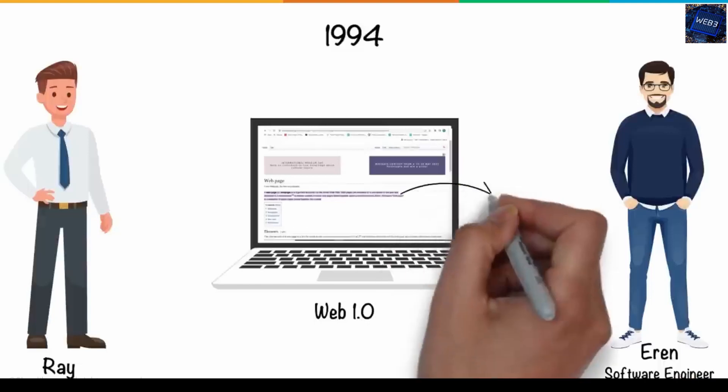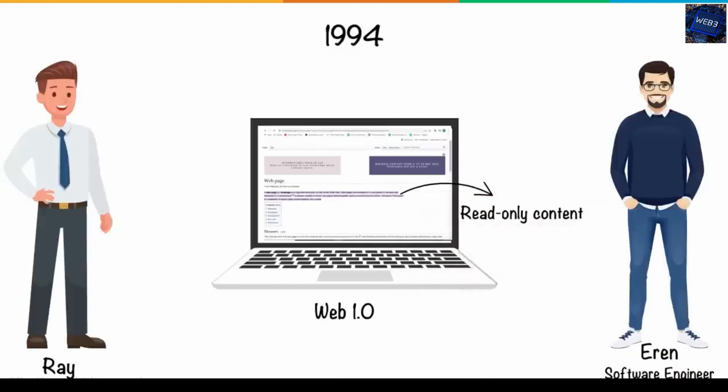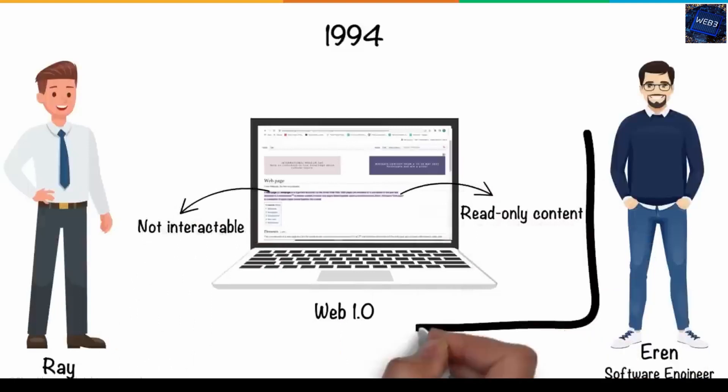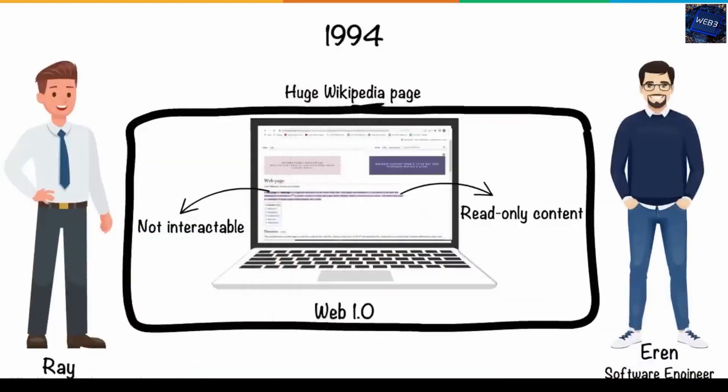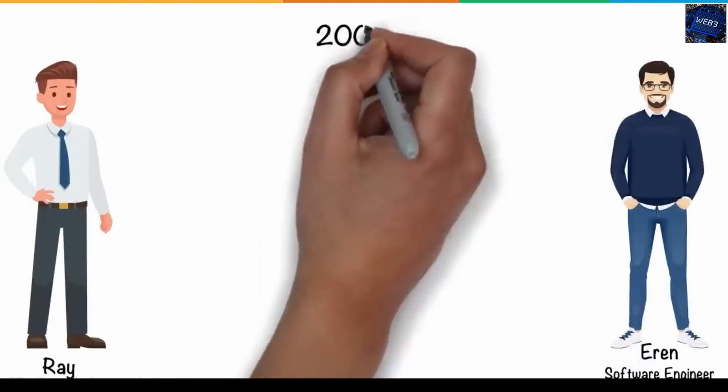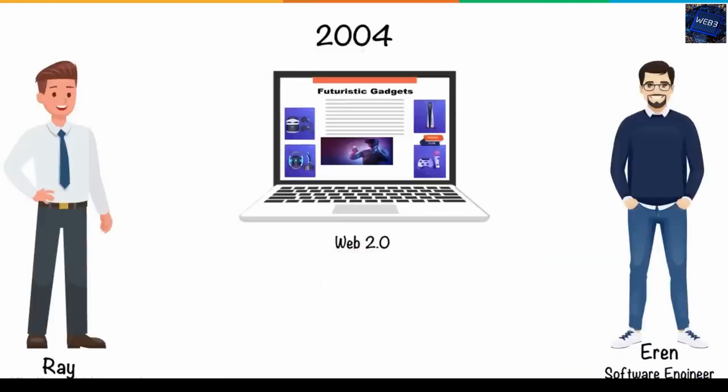Basically, Web 1.0 was all read-only content that was not interactable and was similar to a huge Wikipedia page. But after a few years in 2004, Web 2.0 came into the picture.